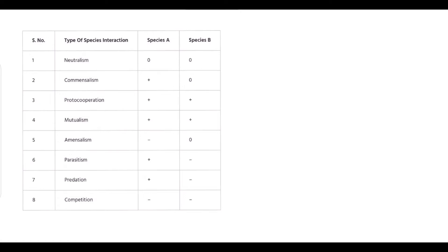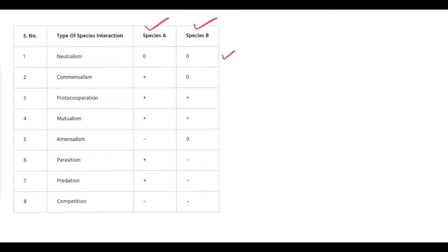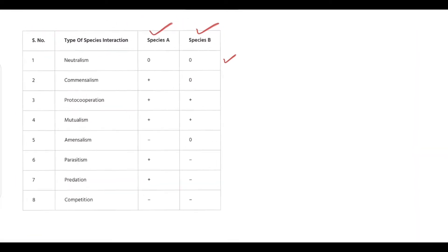Here you can see we have species A and species B, two partners. In neutralism both are zero zero. Then commensalism is positive zero. Protocorporation is positive positive. Mutualism is positive positive. These both have a little difference which is very important. Next we have amensalism negative zero, parasitism positive negative, predation positive negative, and competition negative negative.